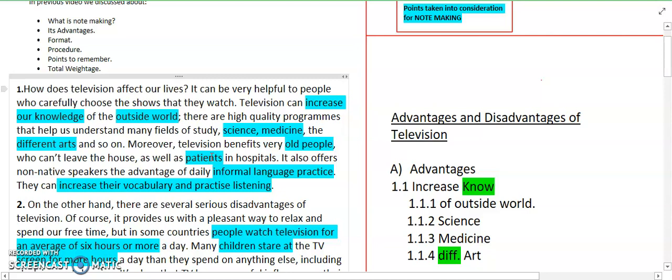So let's go, friends. First of all, we have to read our paragraph. 'How does television affect our life? It can be very helpful to people who carefully choose the shows that they watch. Television can increase our knowledge of outside world. There are high quality programs that help us understand many fields of study: science, medicine, different arts, and so on.'